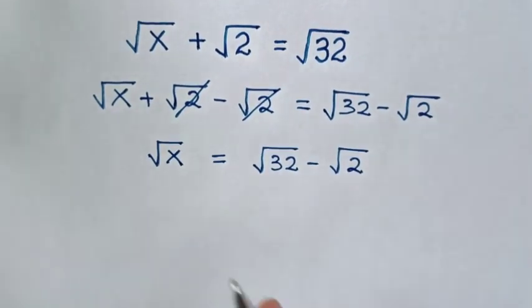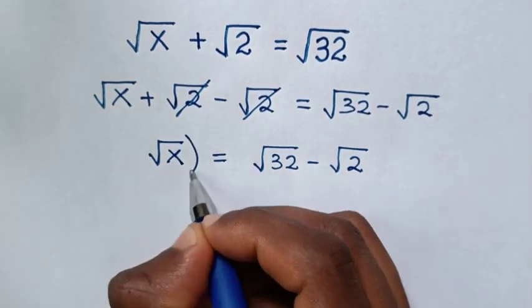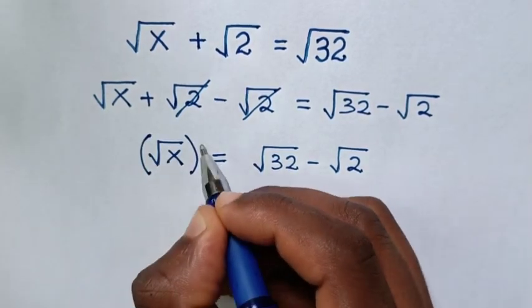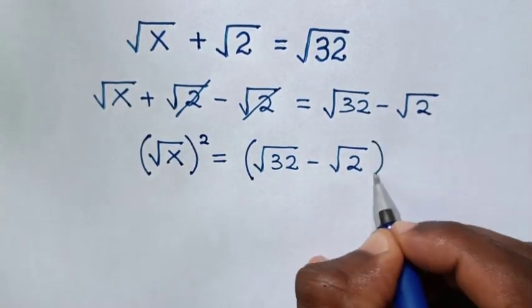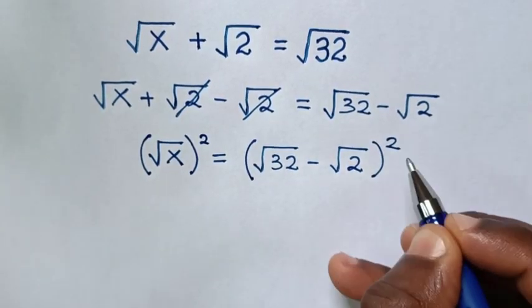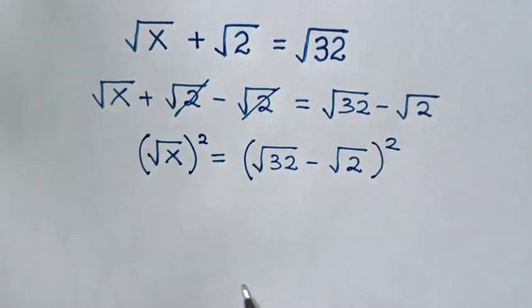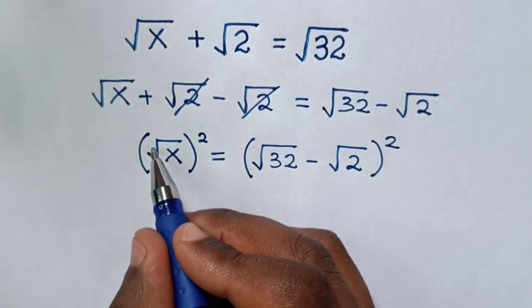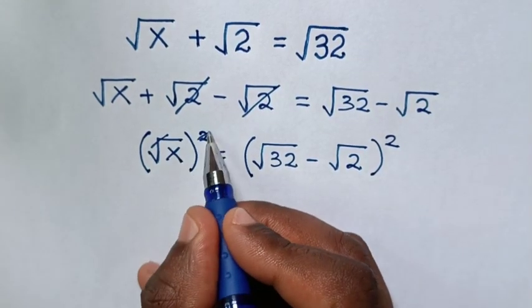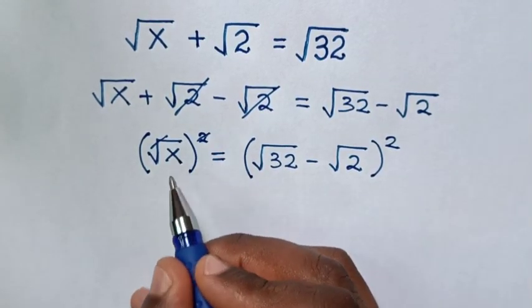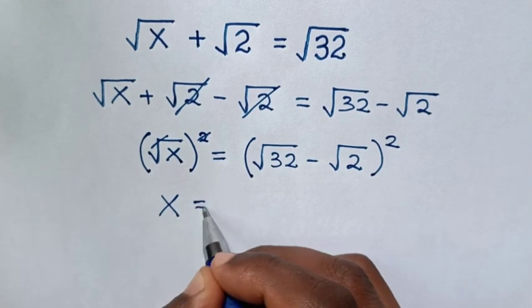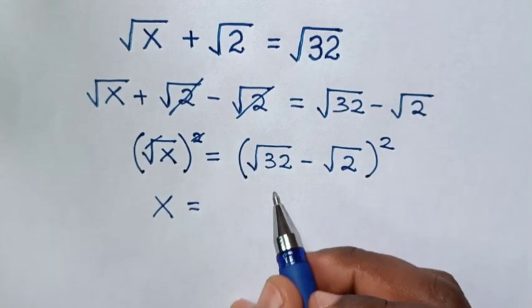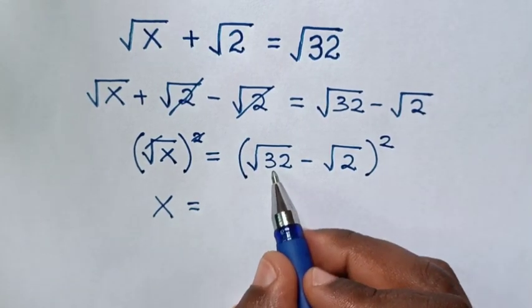Then in the next step we will square both sides. So this square root will cancel with this square, and it will be x is equal to the quantity square root of 32 minus square root of 2, bracket squared.